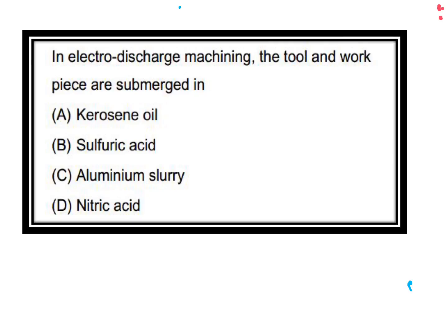Hello friends, welcome to my channel. Your first question is: in Electric Discharge Machining, the tool and workpiece are submerged in — kerosene. Yes, this is the answer. Sulfuric acid, no; ammonium slurry, no; nitric acid, no. The dielectric fluids we are using are kerosene, transformer oil, and paraffin oil.